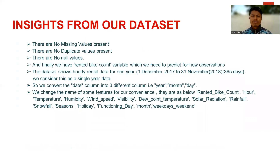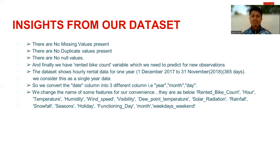Insights from our dataset: there are no missing values present, no duplicate values present, and no null values. We have the rented bike count variable which we need to predict for new observations. The dataset shows hourly rented data for one year — 1st December 2017 to 31st November 2018, spanning 365 days. We consider this as single year data, and we convert the date column into three different columns: year, month, and day.